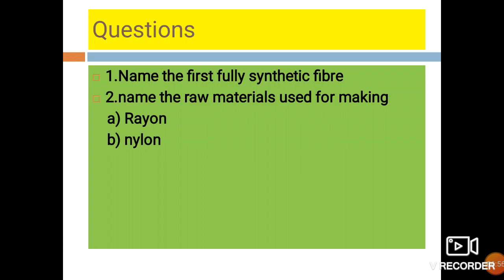Now try to answer these questions. First: name the first fully synthetic fiber. Second: name the raw materials used for making rayon and nylon. Thanks for watching.